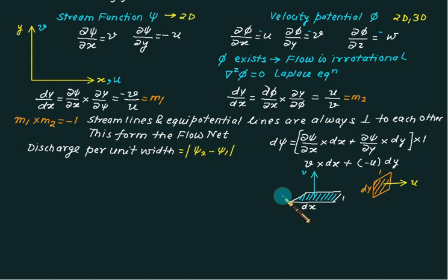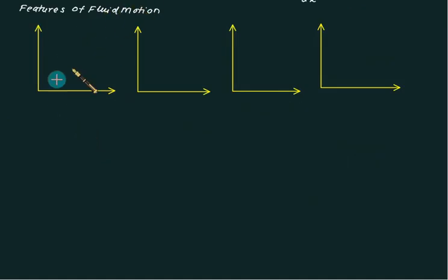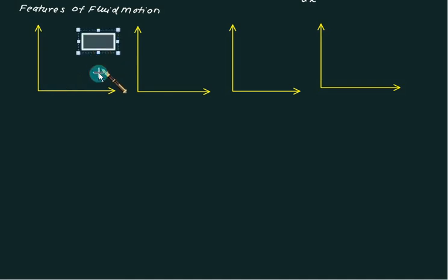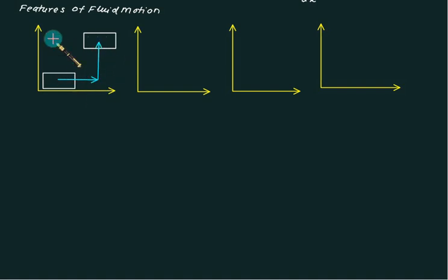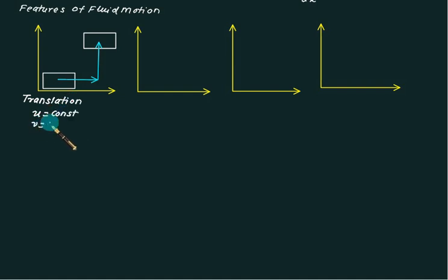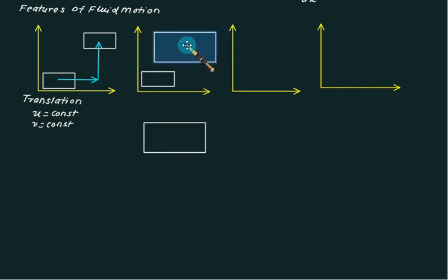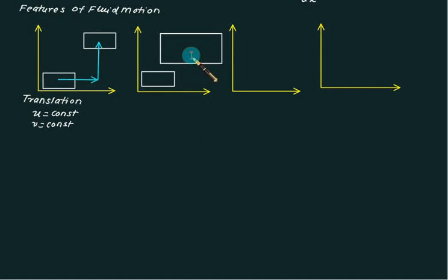Questions often ask about the basic types of fluid motion: translation, deformation, angular deformation, and rotation. Consider a fluid element that moves along the x-axis and then along the y-axis without changing its shape or size. This type of motion — where the fluid particle changes position but does not deform — is pure translation. This is only possible when the velocity u is constant in x and y, and v is also constant, meaning neither depends on x or y.